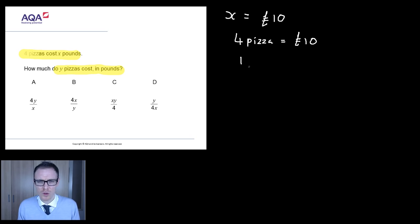If I said to you what's one pizza cost there, do you reckon you could tell me? I reckon you'd probably do 10 divided by four which would give you, if my maths is right, two pound fifty. A bargain for a pizza that would be.